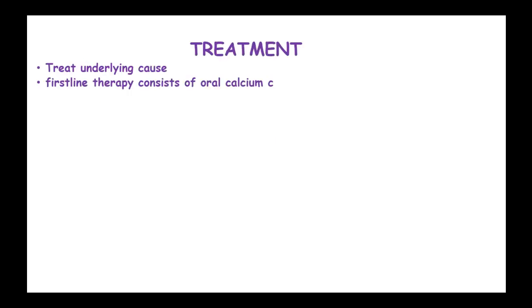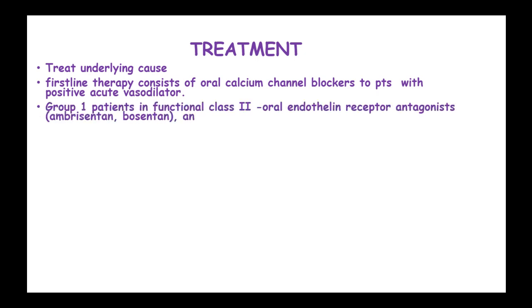Treatment consists of oral calcium channel blockers for patients with positive acute vasodilation response. For Group 1 patients in functional class 3, oral endothelin receptor antagonists such as ambrisentan and bosentan, and phosphodiesterase inhibitors like sildenafil and tadalafil can be used.